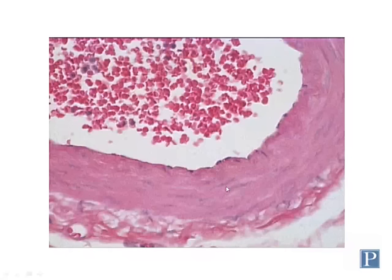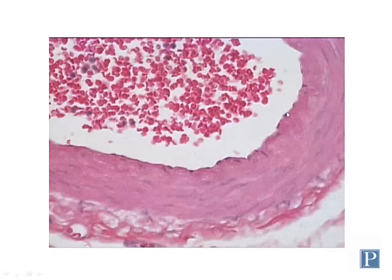Here we have a larger sized artery. You can see it's much larger — the wall is much thicker with many different layers of smooth muscle, and the lumen is much larger. But despite its size, the superficial most layer is only a single cell layer thick — a single layer of endothelium. So be able to classify endothelium in different sized blood vessels as well as lining the chambers of the heart.